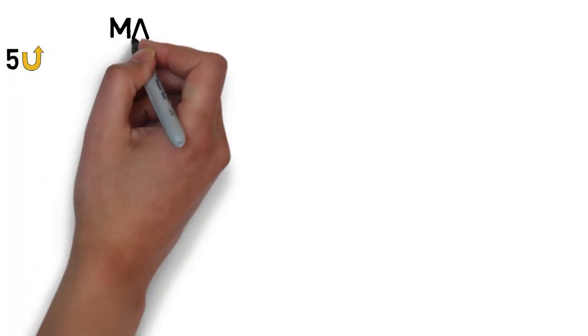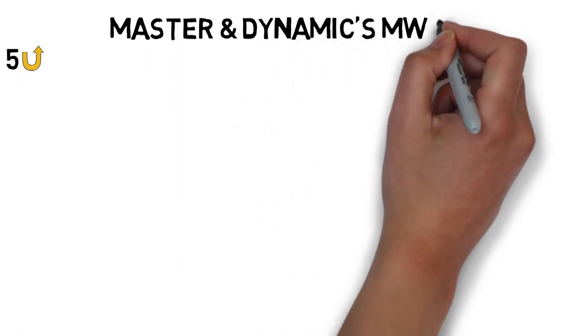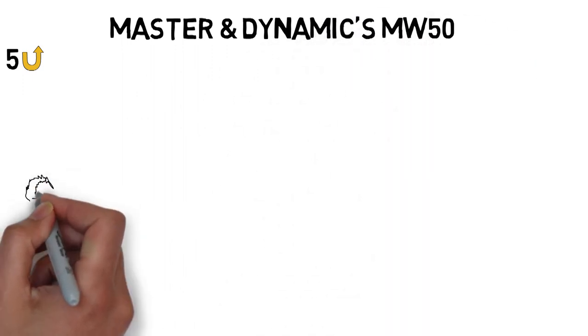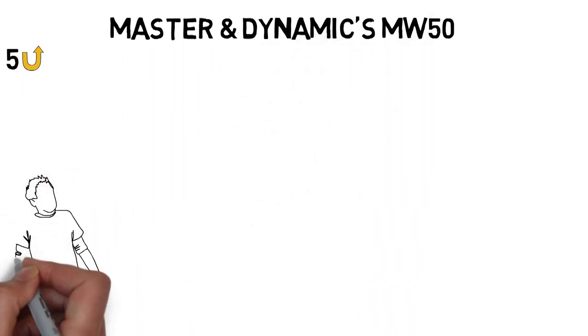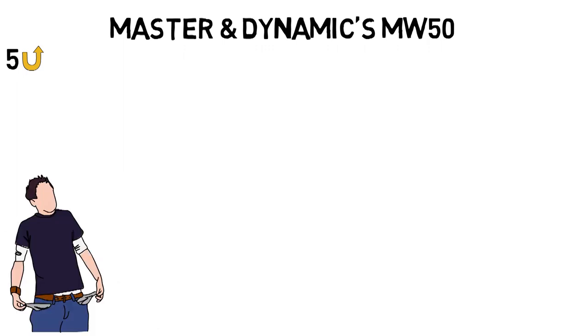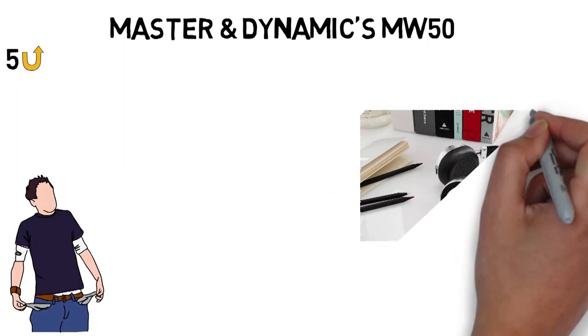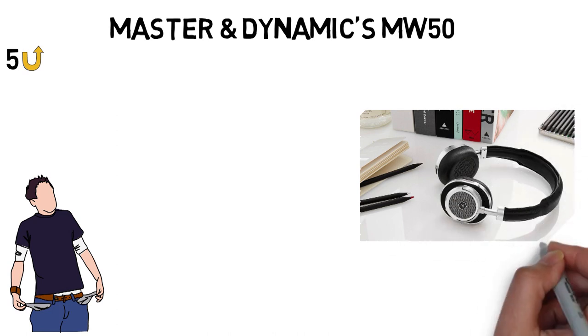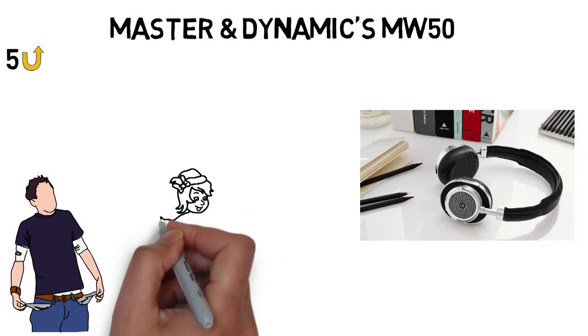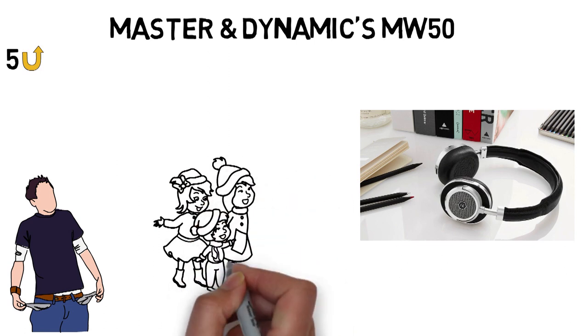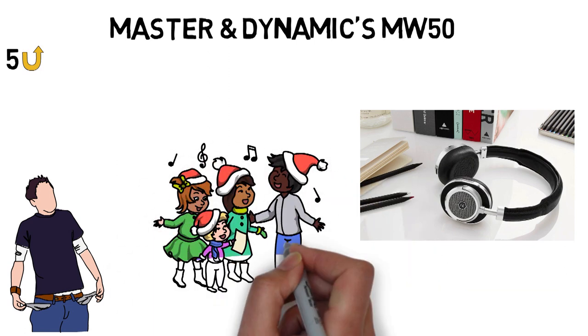Next, we have the best wireless headphones for great sound, which goes to the Master and Dynamic MW50. The best Bluetooth headphones need to sound great, feel nice, and look good, especially since they'll command a high price. Thankfully, Master and Dynamic delivered with the MW50. From the first time you put them on, you'll appreciate their feel, and things will only improve when you actually start listening to music.